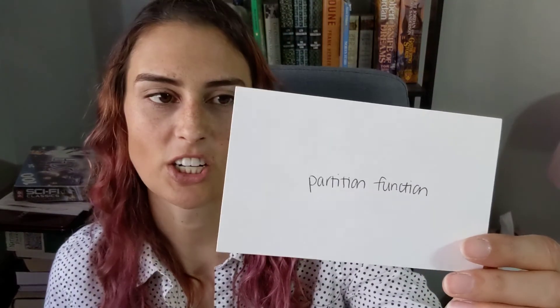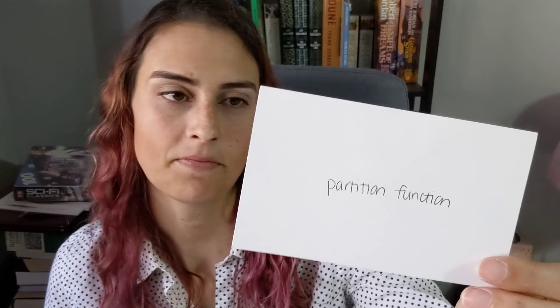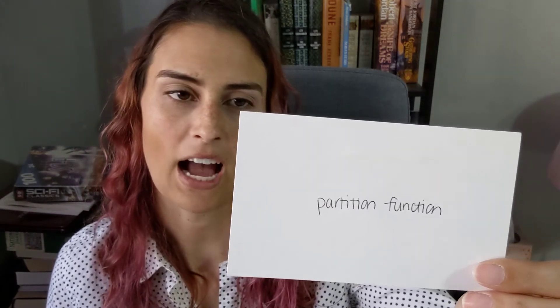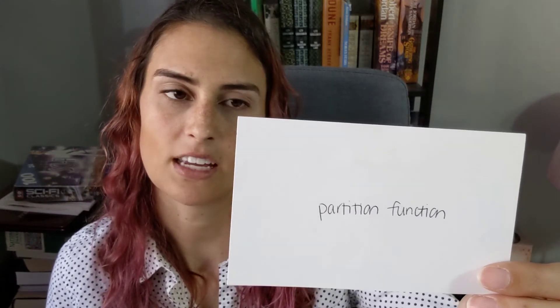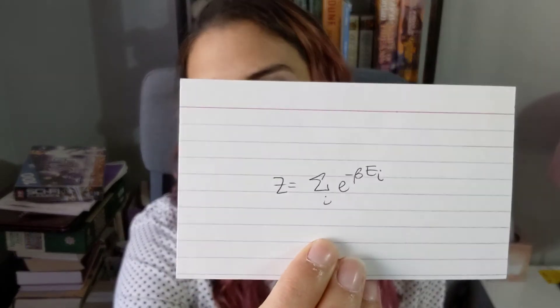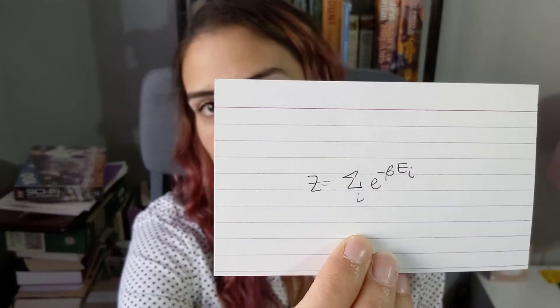Partition function Z is the sum over i of e to the minus beta E sub i, where E sub i is energy.